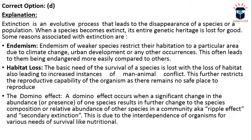For example, if a particular species is heavily dependent upon another species and that other species suffers extinction or changes in its relative abundance, then the dependent species will also suffer. That is called the domino effect, also known as ripple effect and secondary extinction. This is due to the interdependence of organisms for various survival needs, primarily nutritional needs.